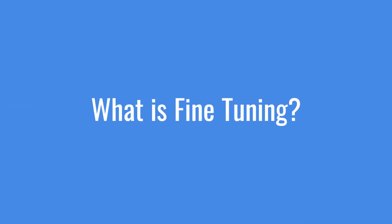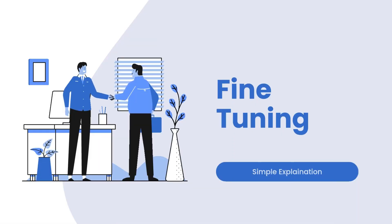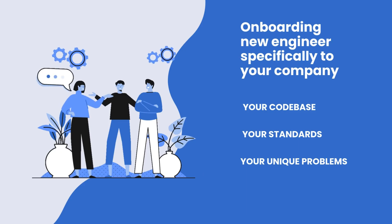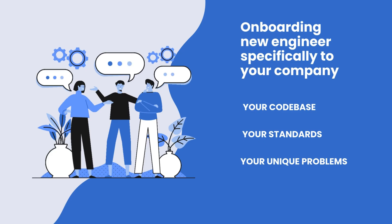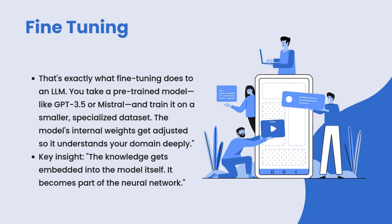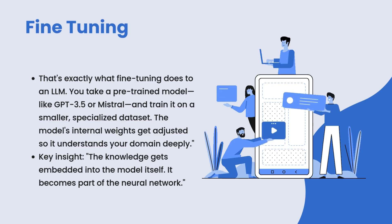The core difference. What is fine-tuning? Imagine you hire a software engineer — they're generally skilled. They can code in Python, understand databases, write tests, but they've never worked in your domain. Fine-tuning is like onboarding that engineer specifically to your company. You spend weeks training them on your codebase, your standards, your unique problems. Now they're not just competent — they're an expert in your specific work. That's exactly what fine-tuning does to an LLM. You take a pre-trained model like GPT-3.5 or Mistral and train it on a smaller specialized dataset. The model's internal weights get adjusted so it understands your domain deeply. Key insight: the knowledge gets embedded into the model itself — it becomes part of the neural network.